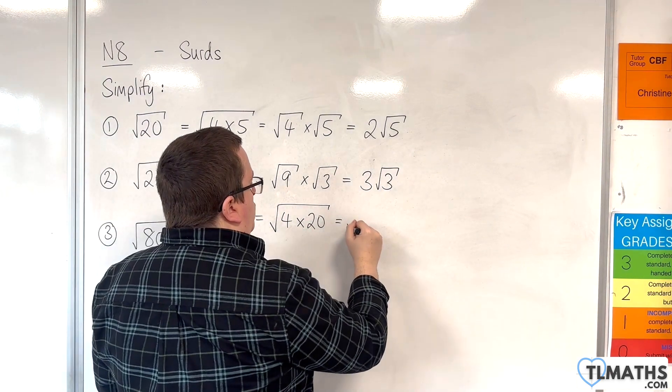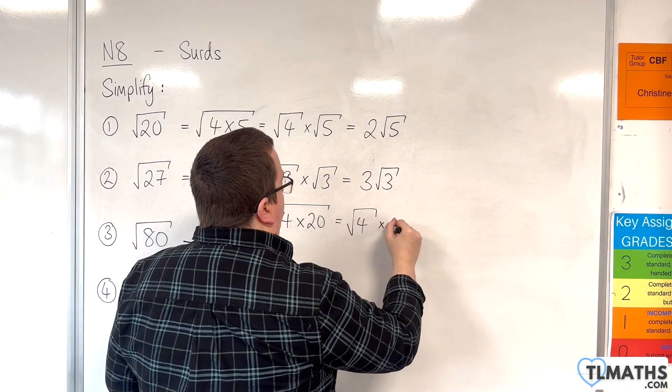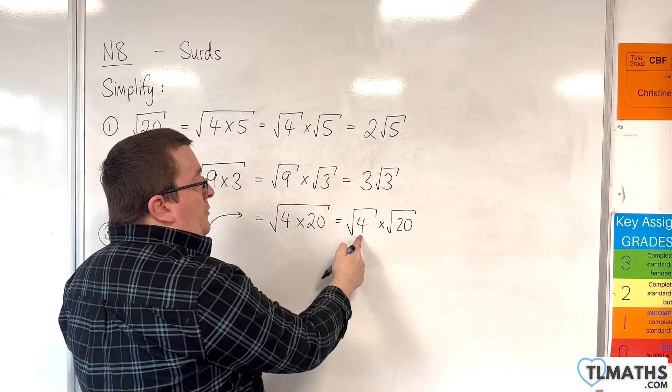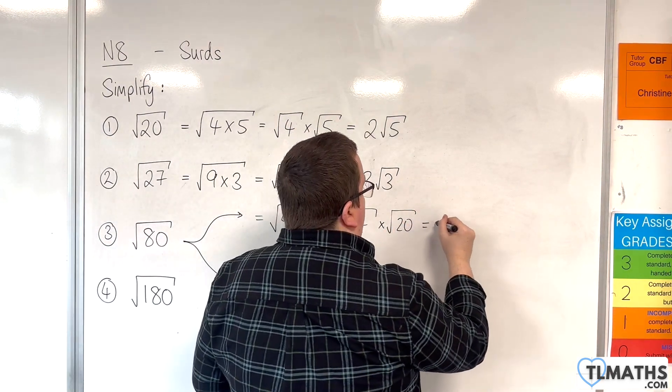We split that up and write that as the square root of 4 times the square root of 20. Square root of 4 is 2, so this is 2 root 20.